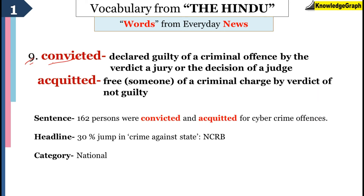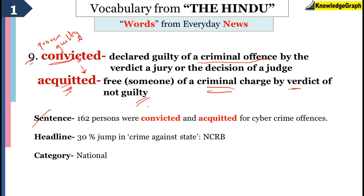The next word is convicted. Convicted means someone who has been proven guilty for a crime — that is, the judges have given a verdict that yes, they have committed the criminal offence. The next word is acquitted. Acquitted is kind of the opposite of convicted. It basically means someone has been freed from a criminal charge by verdict — the judges have given this verdict and they have been proven not guilty. The sentence was: '162 persons were convicted — proven guilty by the judges — and acquitted — freed from criminal charges — for cyber crime offences.'